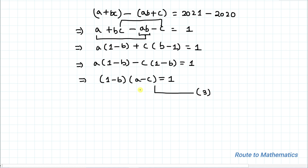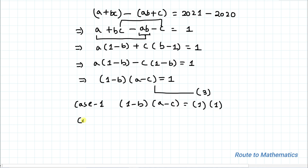In order to satisfy equation 3, the possible integer values of (1 minus B) and (A minus C) can be: Case 1 — (1 minus B)(A minus C) equals 1 times 1, and Case 2 — (1 minus B)(A minus C) equals (minus 1) times (minus 1).